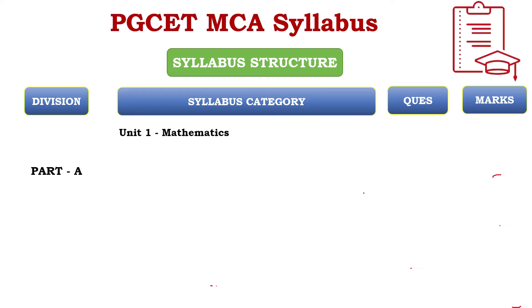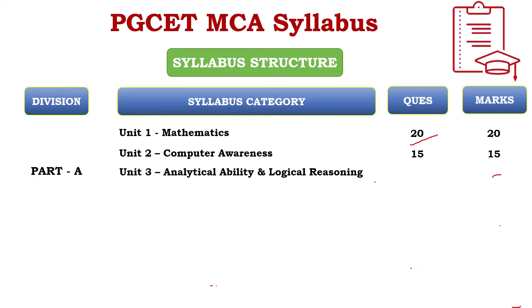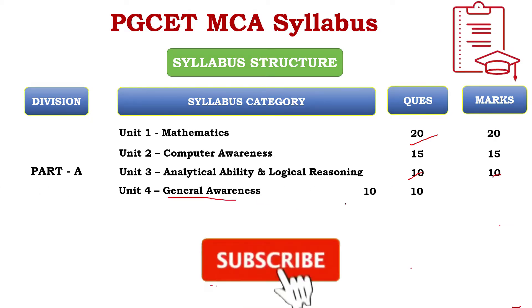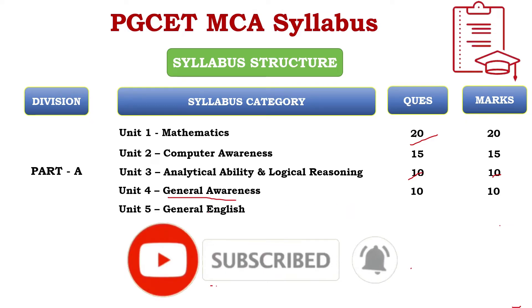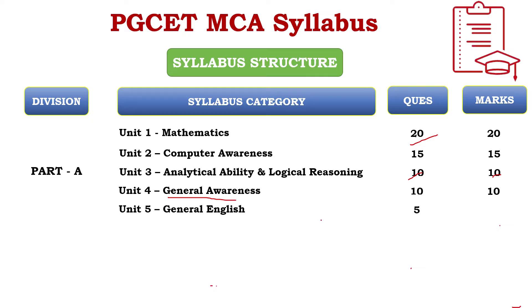In Part A, all units are covered. Unit 1 is Mathematics — 20 questions, 20 marks. Unit 2 is Computer Awareness — 15 questions, 15 marks. Unit 3 is Analytical Ability and Logical Reasoning — 10 questions, 10 marks. Unit 4 is General Awareness — 10 questions, 10 marks. Unit 5 is General English — 5 questions, 5 marks. Each question carries one mark, so Part A has 60 questions for a total of 60 marks.